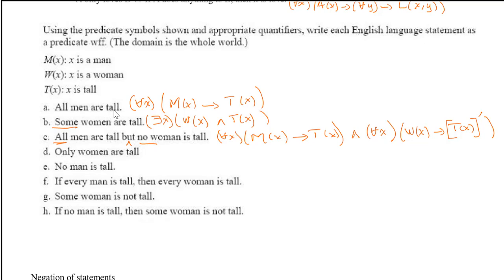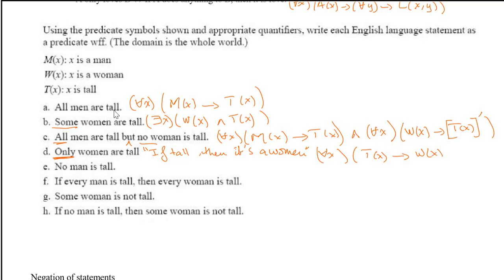'Only women are tall.' Going back to the word 'only' — I can restate it as: if something is tall, then it is a woman. Symbolically: for all x, if T(x) then W(x) — ∀x(T(x) → W(x)). The word 'only' reverses the direction of the implication compared to 'all women are tall.'